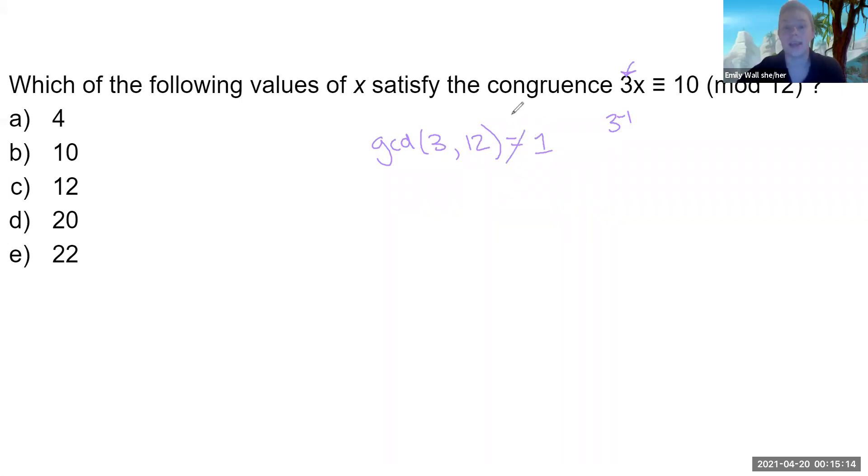And it is not 1 in this case. The greatest common divisor is 3. So that sucks. Can't do the inverse method.